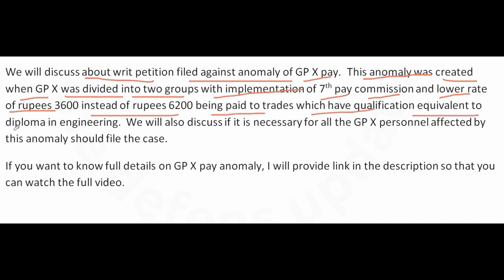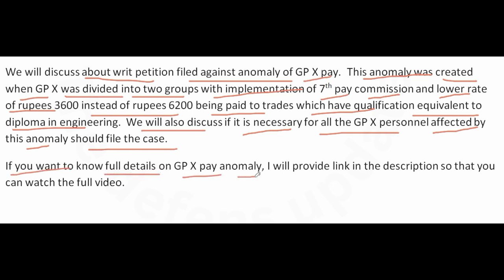The lower rate of rupees 3600 instead of 6200 is being paid to trades which have qualifications equivalent to a diploma in engineering. We will also discuss if it is necessary for all the Group X personnel affected by this anomaly to file the case. If you want to know full details on Group X pay anomaly, I will provide a link in the description so that you can watch the full video.